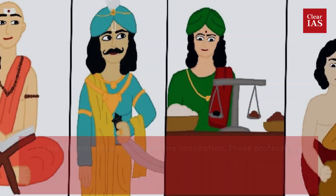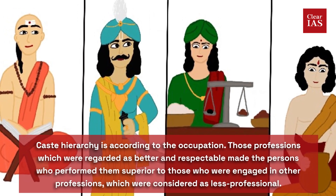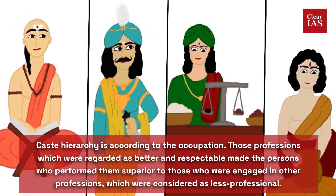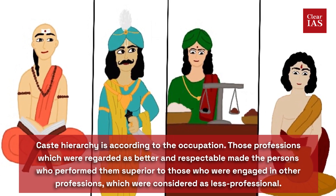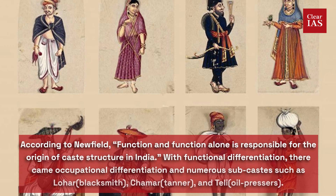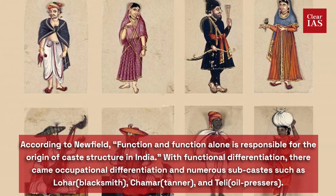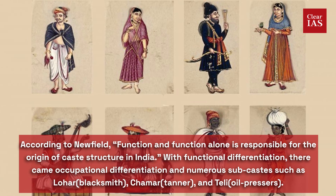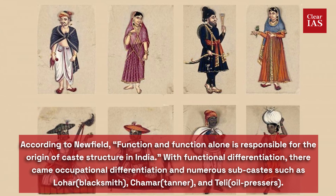Occupational Theory: Caste hierarchy is according to occupation. Those professions which were regarded as better and respectable made the persons who performed them superior to those engaged in other professions considered less prestigious. According to Newfield, function and function alone is responsible for the origin of caste structure in India. With functional differentiation came occupational differentiation and numerous sub-castes, such as Lohar, who are the blacksmiths, Charmar, who are the tanners, and Teli, the oil pressers.